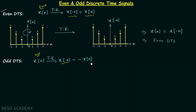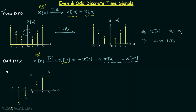From this we can see that X(-N) is equal to minus X(N). Now we will solve one example. In this example, this is the plot of signal Xn and we will perform the time reversal operation, meaning we will flip the signal waveform about the y-axis. When n is equal to minus 3, the value of X(-N) will be 3, and when n is equal to 3, the value of X(-N) will be minus 3. So this 3 will come here and this minus 3 will come here.